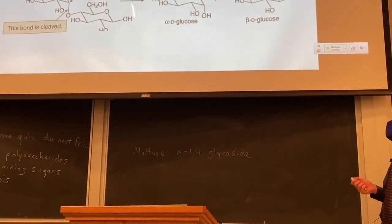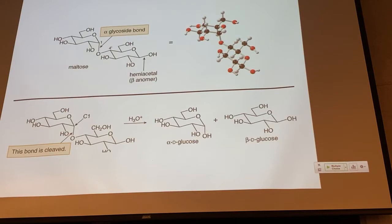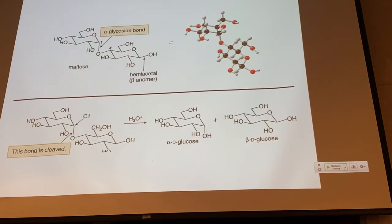To describe the glycoside bond in maltose, we need to go further than just saying it is an alpha glycoside. We would call it an alpha-1,4' glycoside, because we have to mention which carbons are linked together. The '1' refers to carbon 1 on the monosaccharide involved in the glycoside — the anomeric carbon of our aldose. The prime numbers refer to the sugar that is not the glycoside, the one with the hemiacetal.